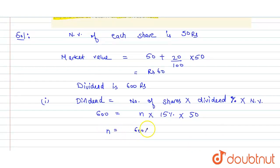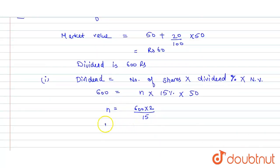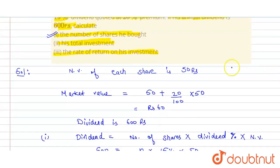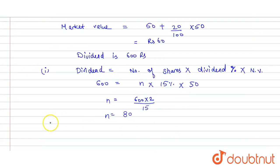Solving for n, we get n equals 600 multiplied by 2 divided by 15. After simplifying, we get n equals 80. So number of shares is 80.